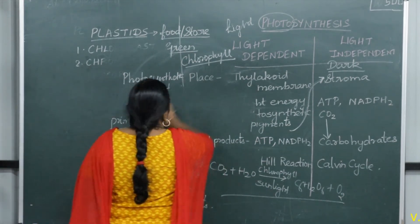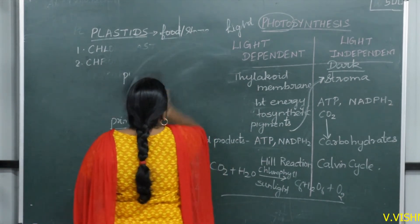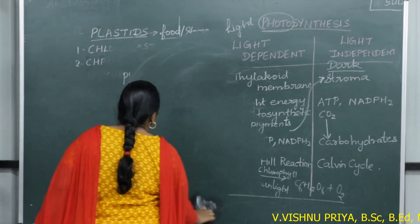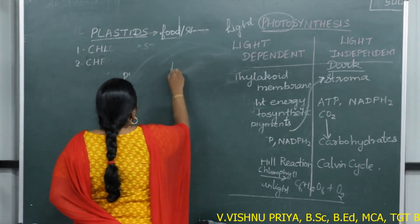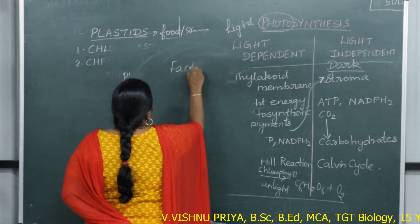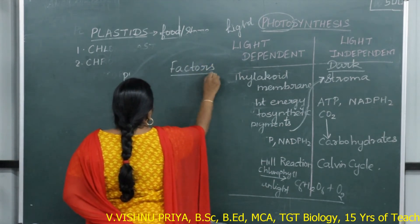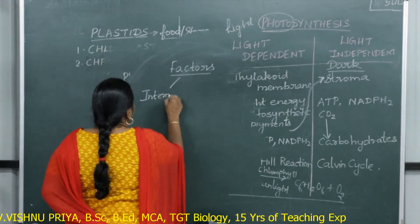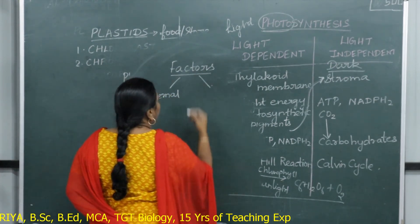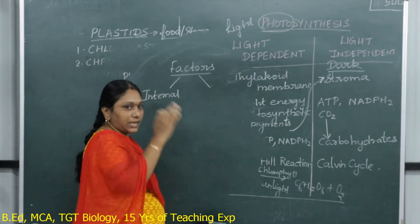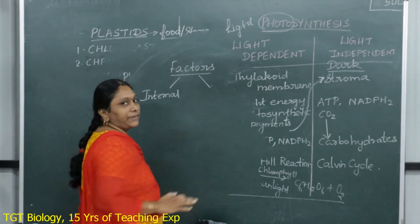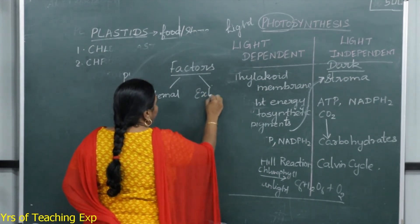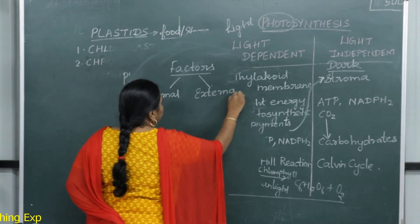Another thing to remember is the factors affecting photosynthesis — this can be asked in two marks. There are internal factors and external factors. Internal factors are those inside the plant that affect photosynthesis. External factors include carbon dioxide, availability of water, light, and some mineral elements.